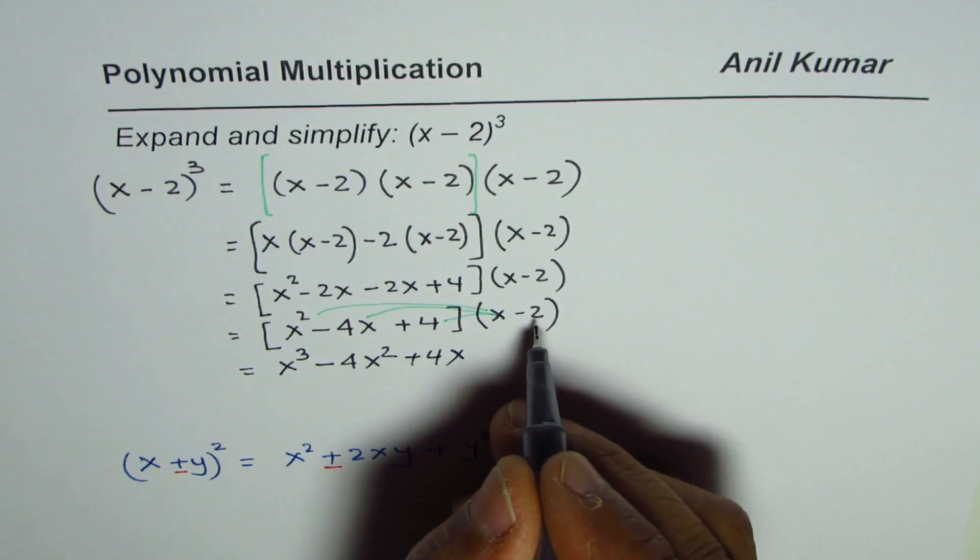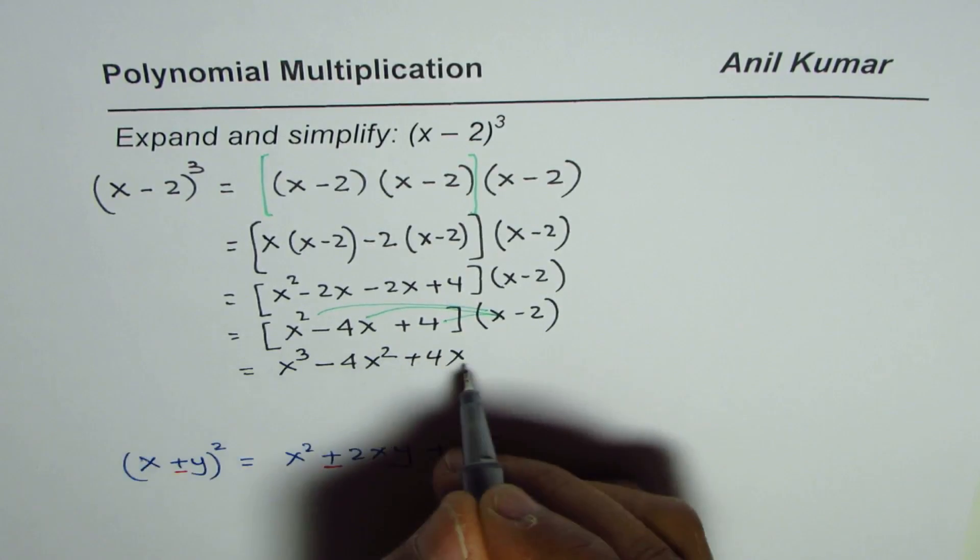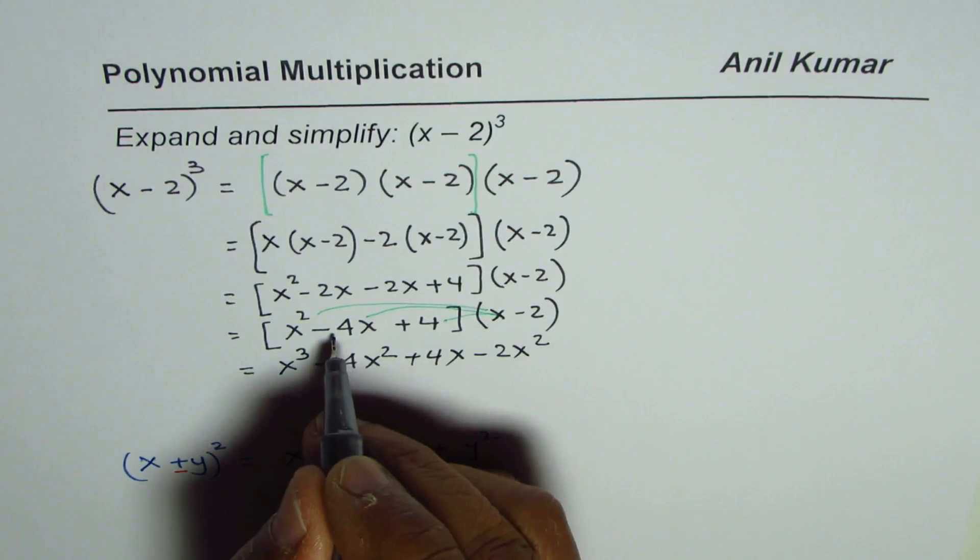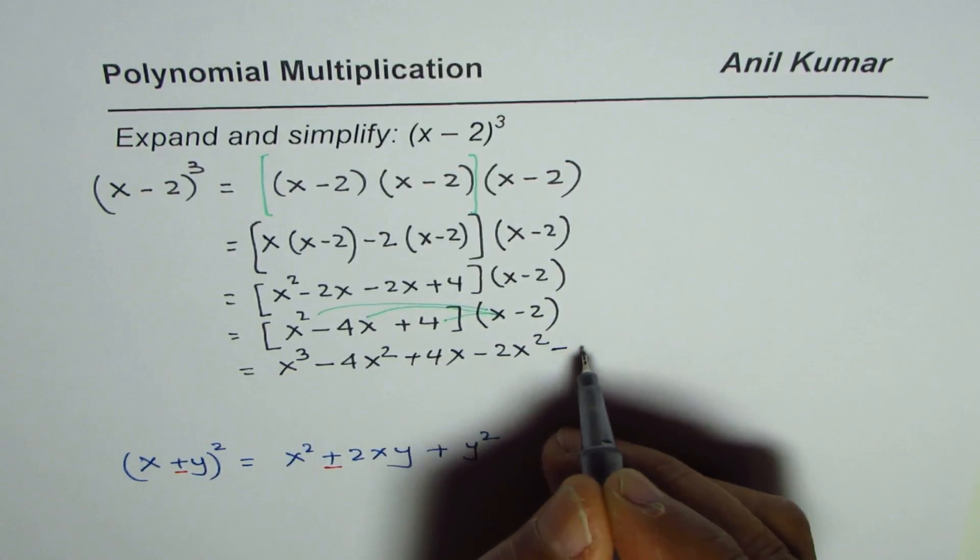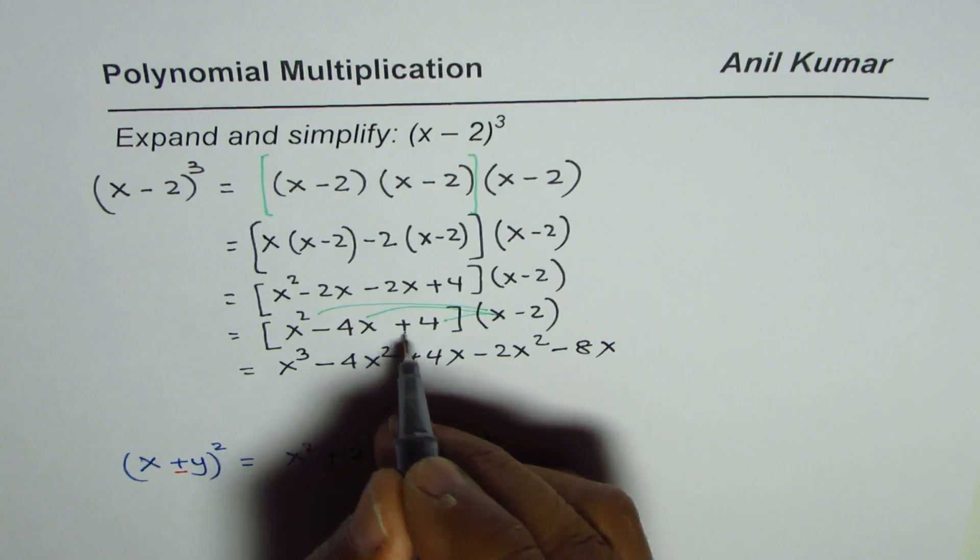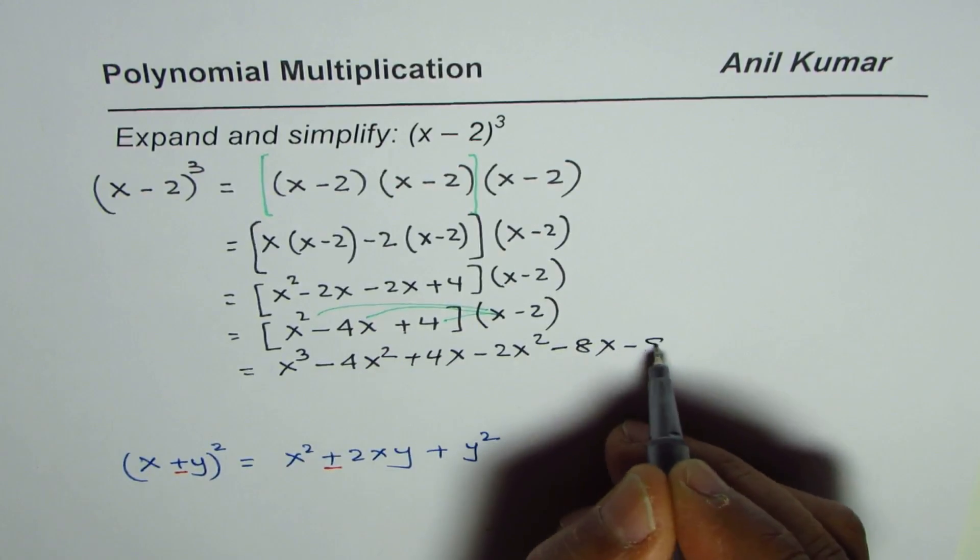We will do the same thing with minus 2. Minus 2 times x square is minus 2x square. Minus 2 times minus 4 is minus 8x, and minus 2 times 4 is minus 8.